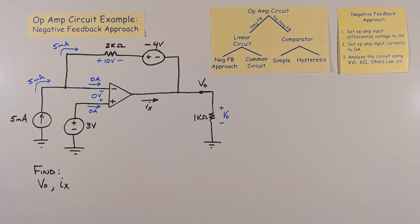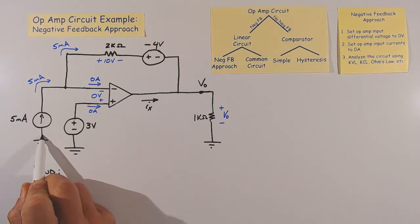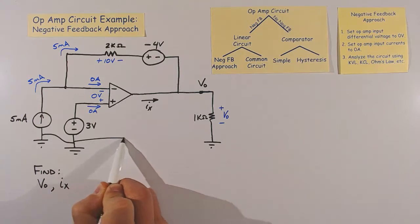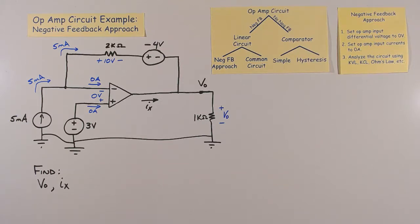Since all connections to ground act as one node, let's connect all the grounds together to help us visualize the circuit more easily. With the grounds connected, it looks like we can write a KVL equation to solve for V0.